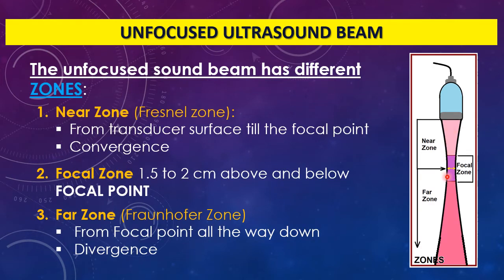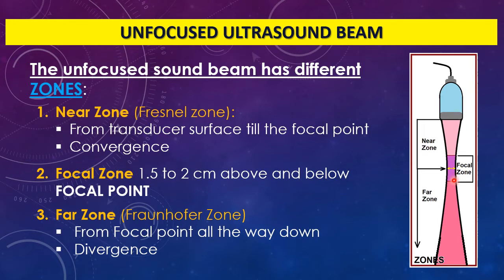Studying this ultrasound beam, we know it has a natural focal point and comes from a single element transducer. When we dissect its anatomy, we find three zones. The first zone runs from the transducer surface to the narrowest point of the beam — the focal point — and is called the near zone or Fresnel zone. Then we have the focal zone, which is the area around the focus, approximately one to two centimeters proximal and distal to the focal point. This is the narrowest zone in the beam.